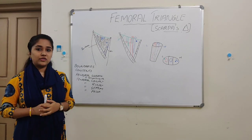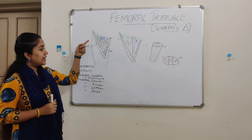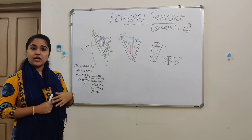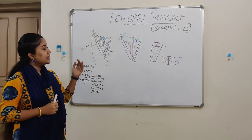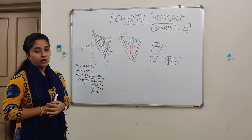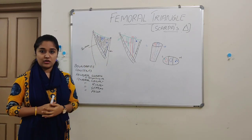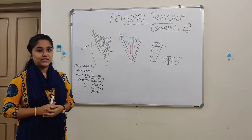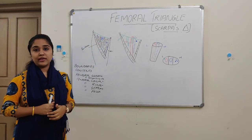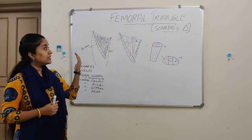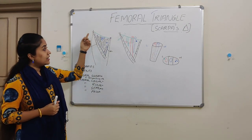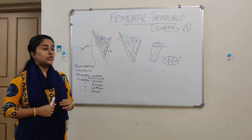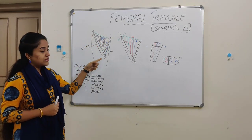We will see what are its boundaries. It has got a base, an apex which is directed downwards, a medial boundary, a lateral boundary, and also roof and floor. The medial boundary is formed by the medial border of the adductor longus muscle, whereas the lateral boundary is formed by the medial border of the sartorius muscle. The base is formed by the inguinal ligament, which extends from the anterior superior iliac spine to the pubic tubercle, and the apex is formed by the meeting point of the adductor longus and the sartorius.